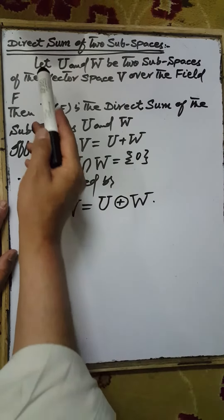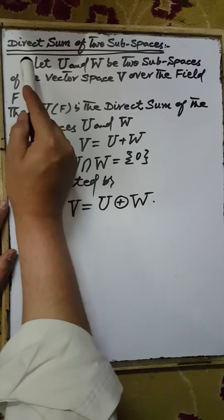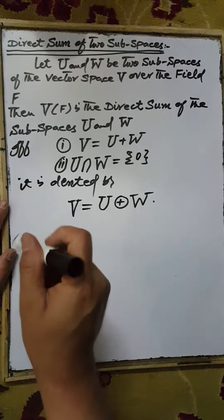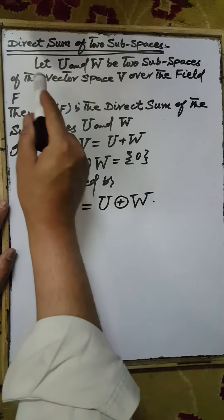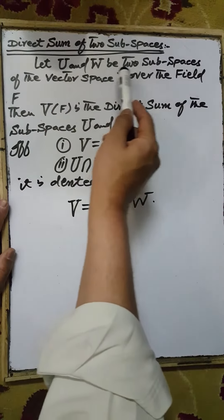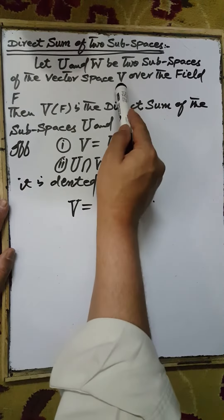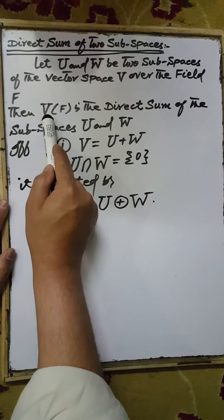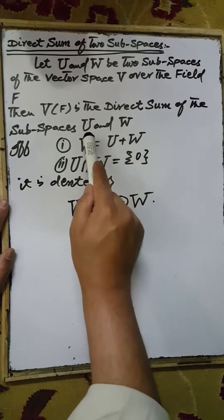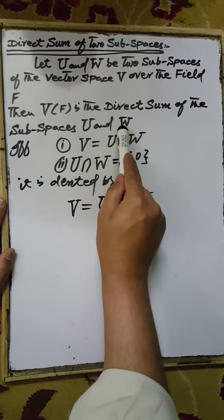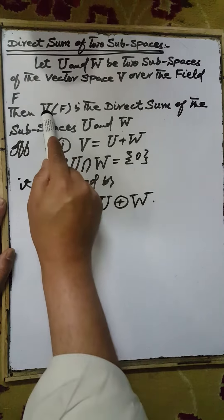Our next topic is the direct sum of two subspaces. Let U and W be two subspaces of the vector space V over the field F. Then the vector space V over the field F is the direct sum of the subspaces U and W.